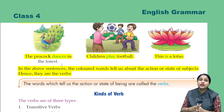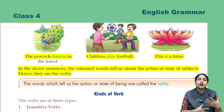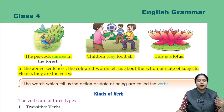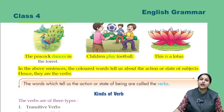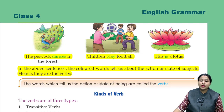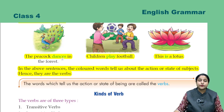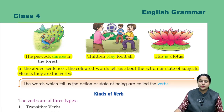These words tell us about the action — what work is being done, what the subject is doing, or what state the subject is in. Like 'dances' — what is the peacock doing? Dancing. What are the children doing? Playing. And 'this is a lotus' tells us about a state. So all these colored words are verbs.